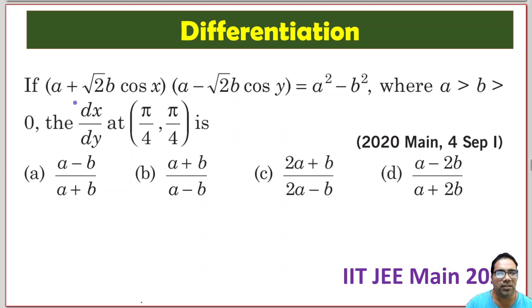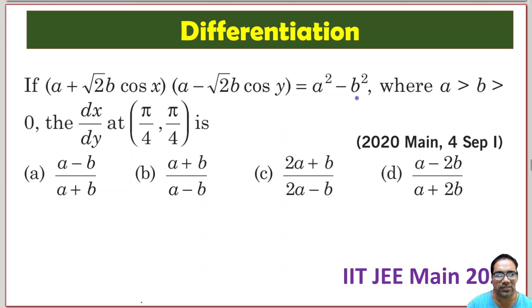Hi friends, here we are given this big function: (a + √2b·cos x)(a - √2b·cos y) = s² - b², and we have to calculate dx/dy at π/4 and π/4.